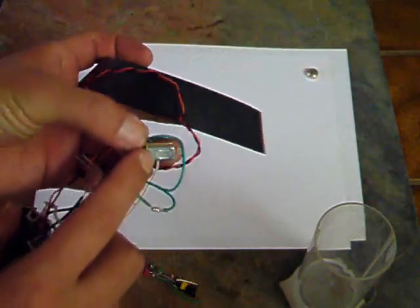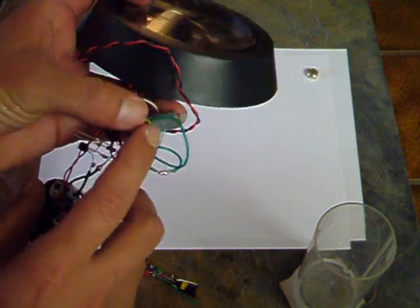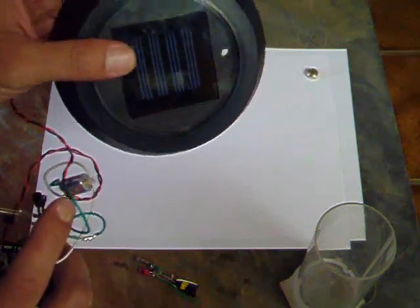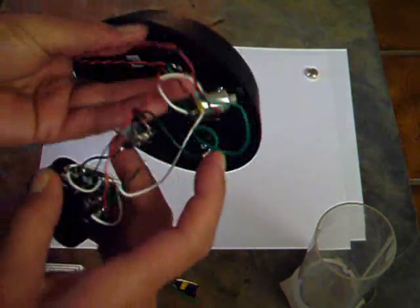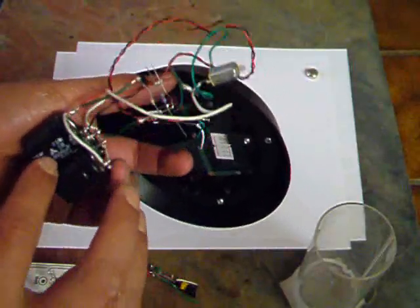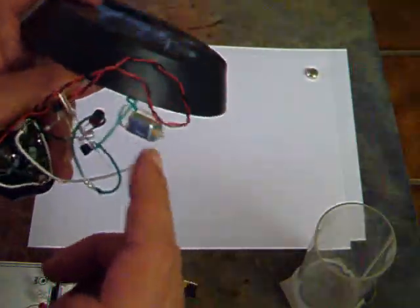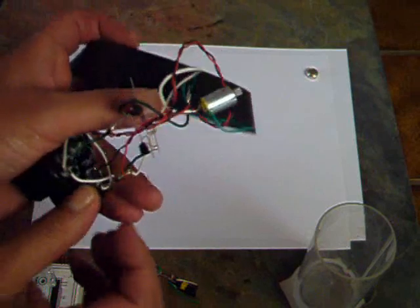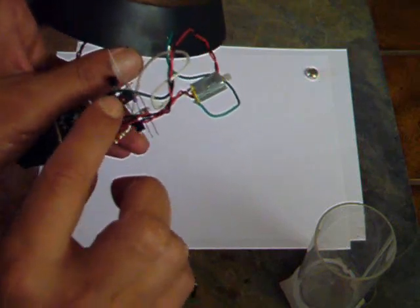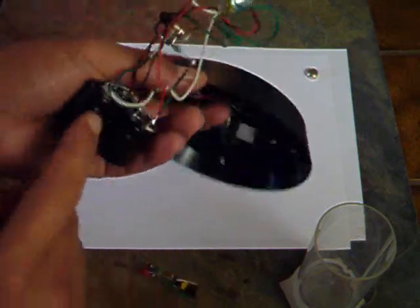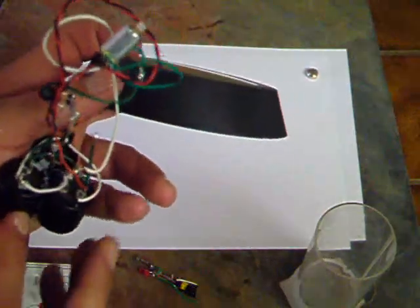So because this motor takes a little bit more juice to run it than the solar panel has, what it does is it stores it up and it sends a pulse to the motor. And the flashing LED also acts as an activator too to help release the electrons out of the capacitors.